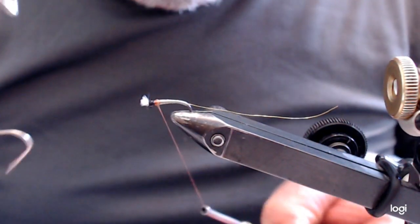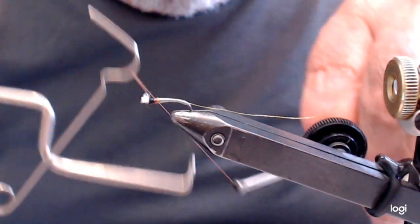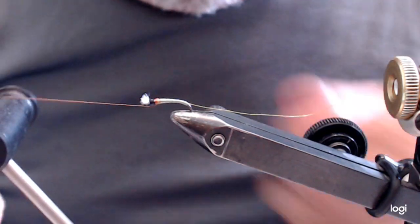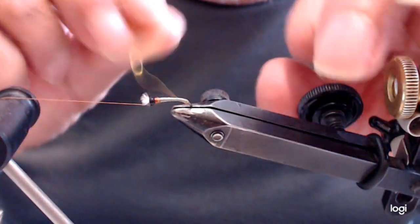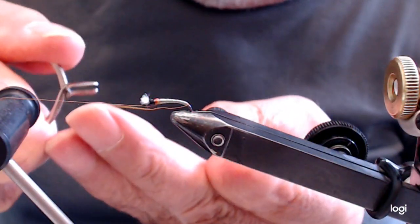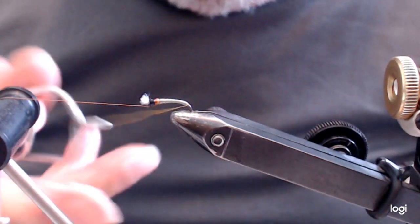Give myself another half hitch here. Then I'll bring the thread, or the rib up. I like to use my hackle pliers. For me, it gives me better control.